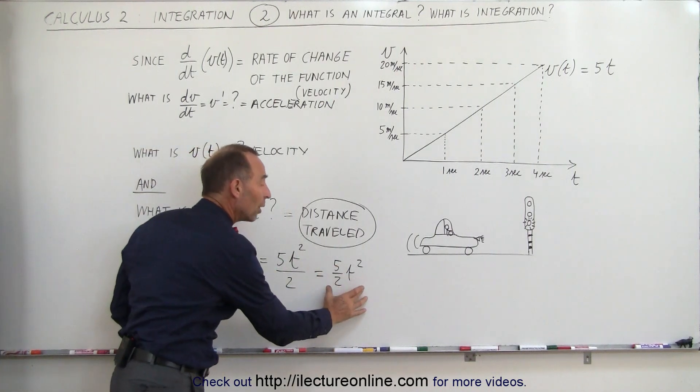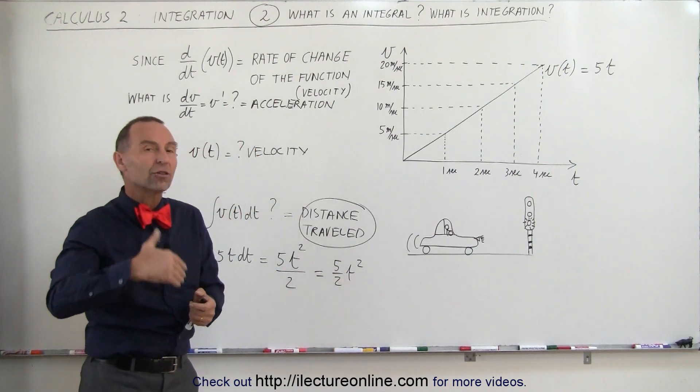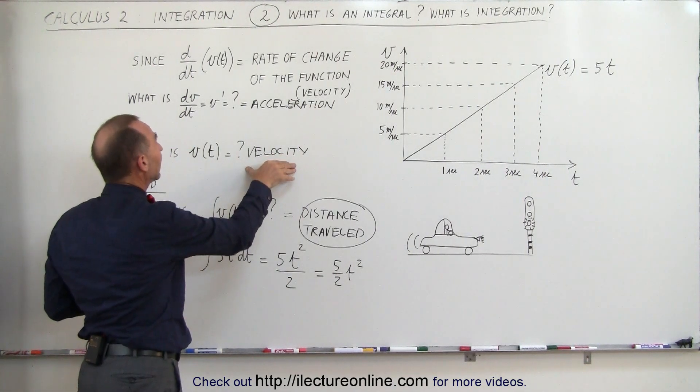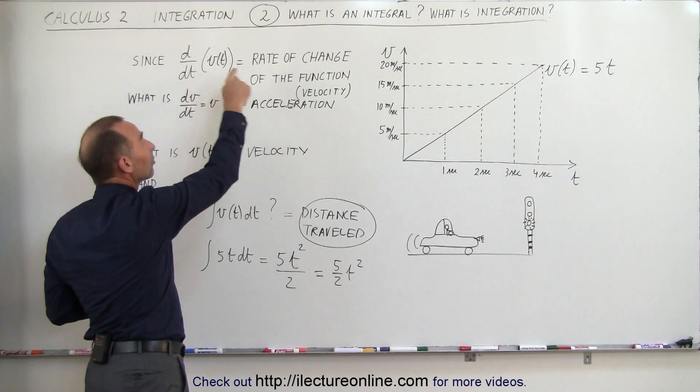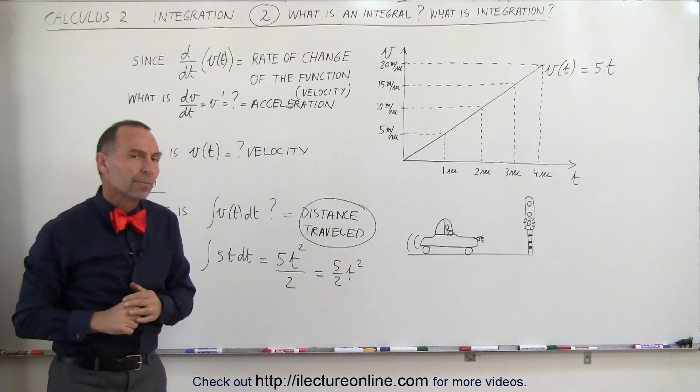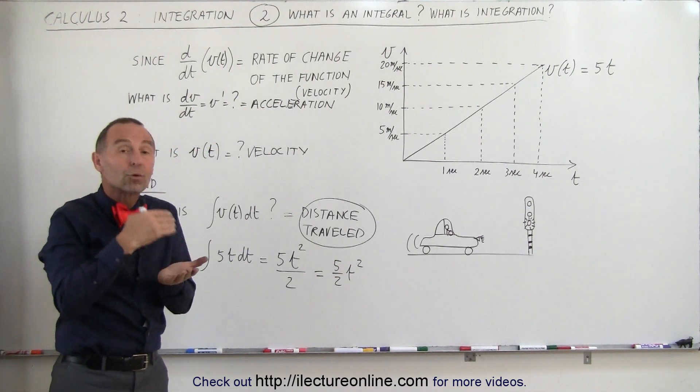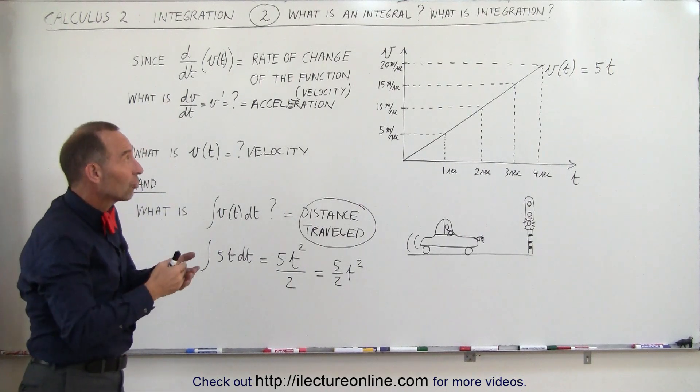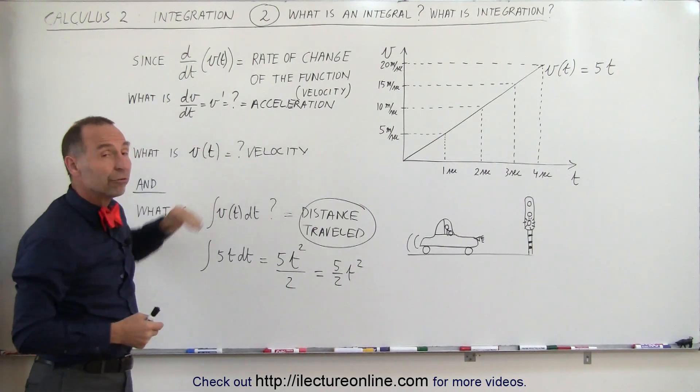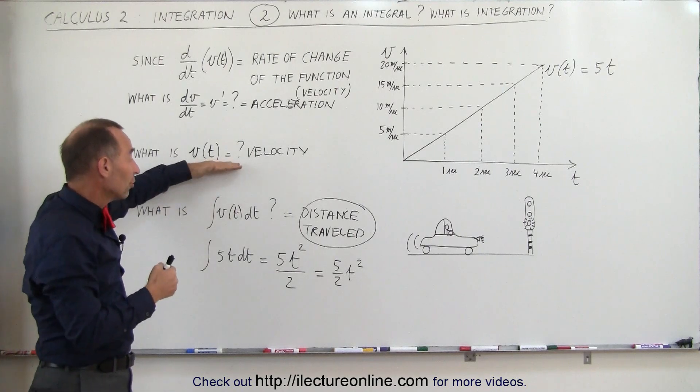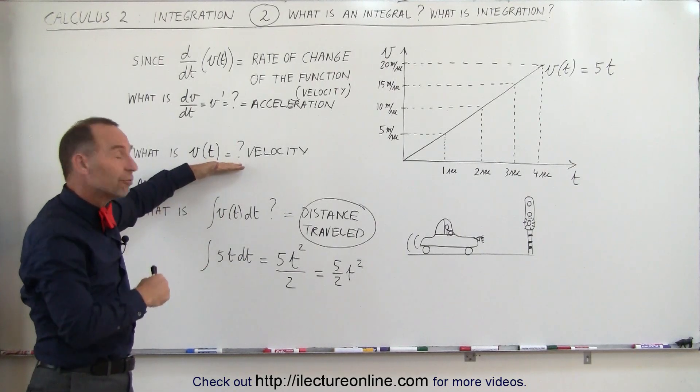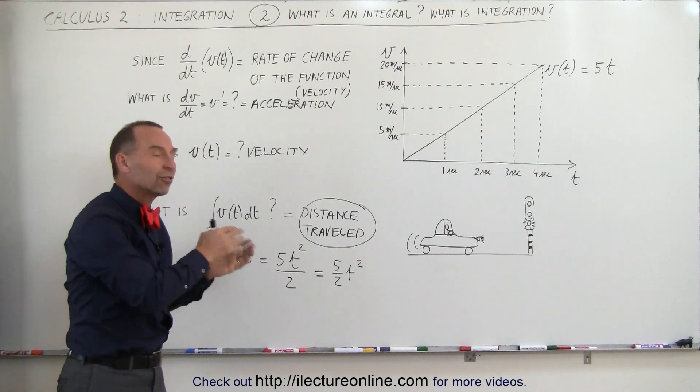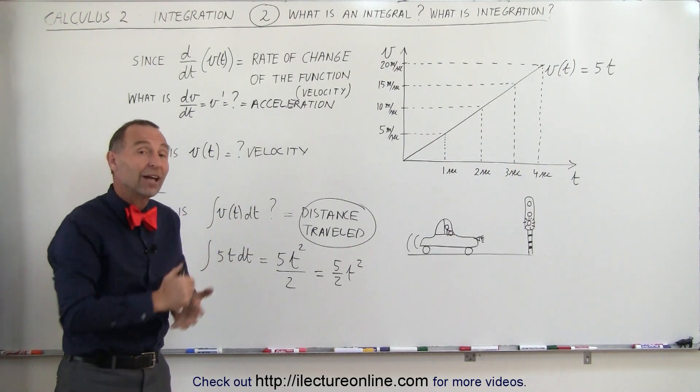So this equation now represents how far the car travels. The original function tells us how fast it's traveling. If we take the derivative of the function, it tells us how fast it's accelerating. So you can see that integration tells us information about the function. It allows us to go from the derivative back to the original function or, starting from the original function, we take the integral of that function, it tells us something else about the function. In this case, it tells us how far the car has traveled.